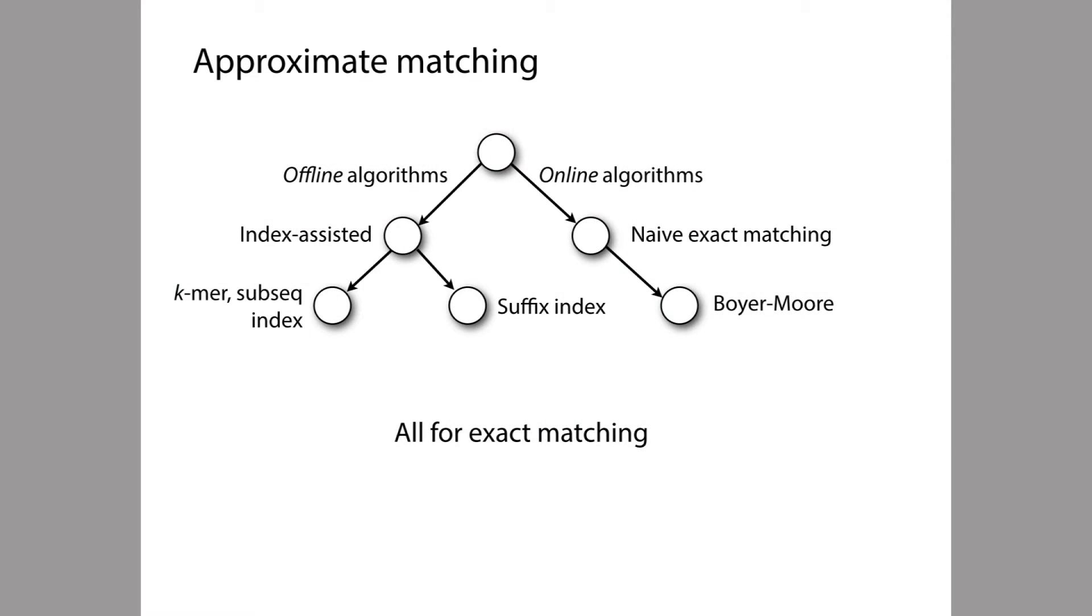Up until now, we've discussed a few different ways of solving the exact matching problem: naive exact matching, Boyer-Moore, and index-assisted offline methods. But exact matching isn't quite what we want. The read will not necessarily match the genome exactly in its point of origin.